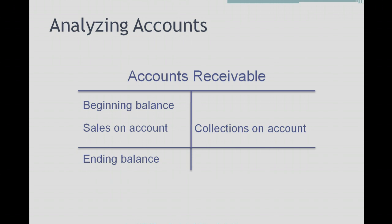If we were evaluating the accounts receivable account — accounts receivable represents amounts that we are waiting to receive from our customers. We've already sold our product or service on account, which means on credit, and now we are waiting to receive money from our customers. The beginning balance on this account reflects how much money we were expecting to receive from customers at the beginning of the year. Then increases to accounts receivable would be additional sales that we did on account during the period, which increases the amount of money we are expecting to receive.